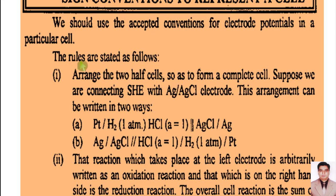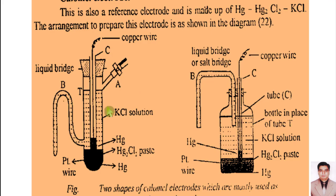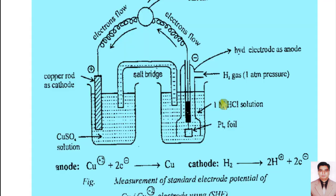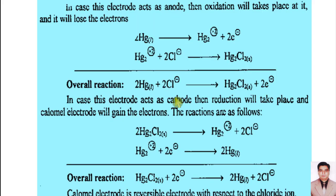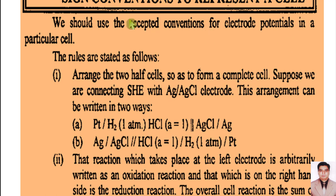Now at the end, we write the sign convention to represent a cell. A complete cell is produced when two half reactions are connected — one taking place at the oxidation side and the other at the reduction side. The first rule is: first arrange the two half cells so as to form a complete cell. For example, we are connecting the standard hydrogen electrode with the silver-silver chloride electrode.